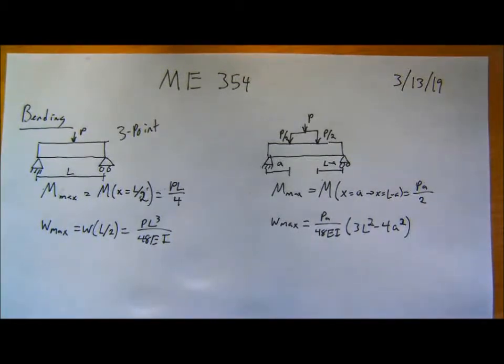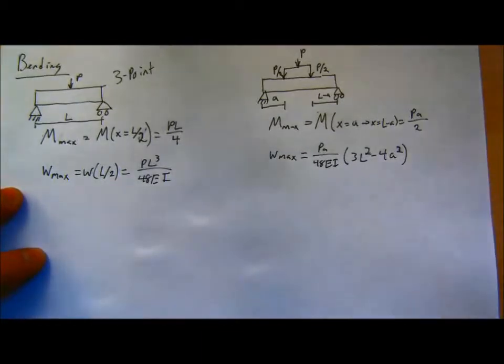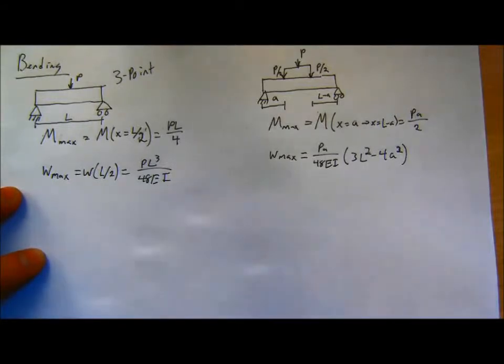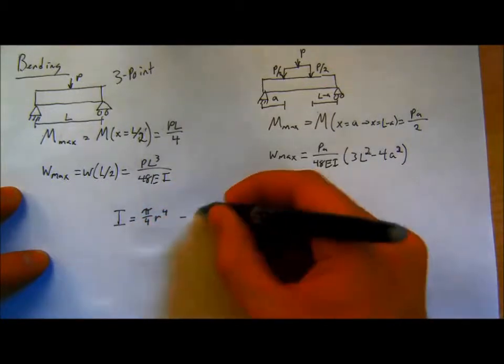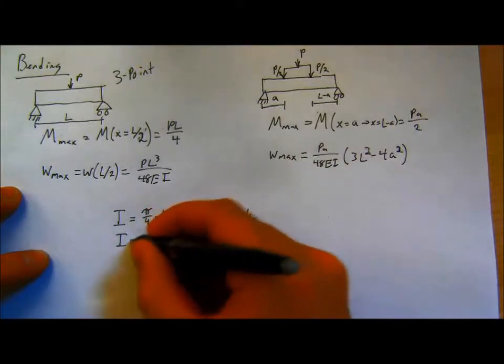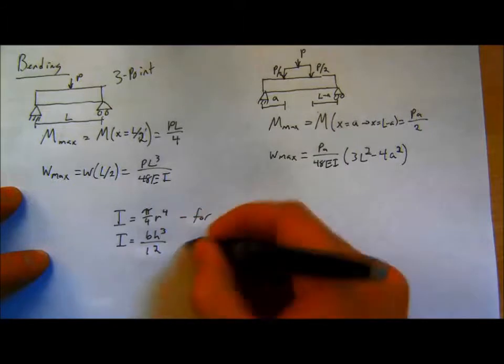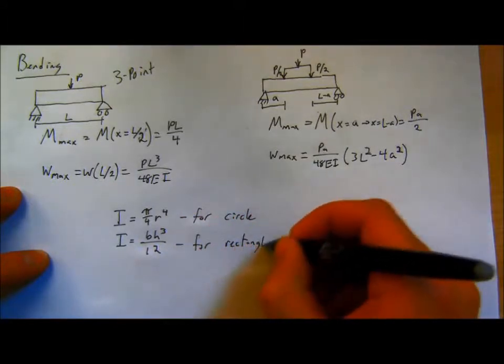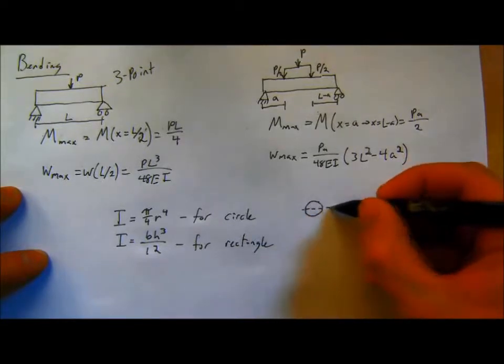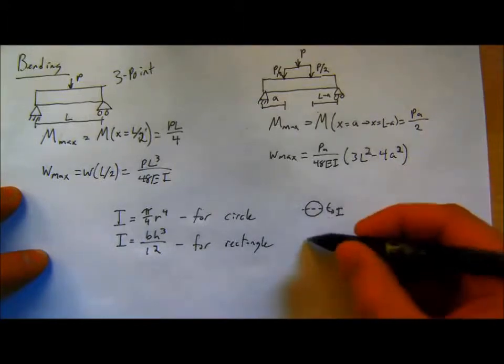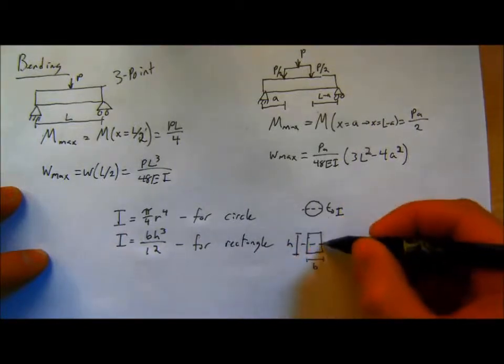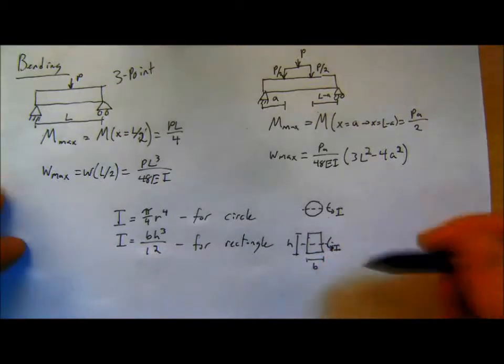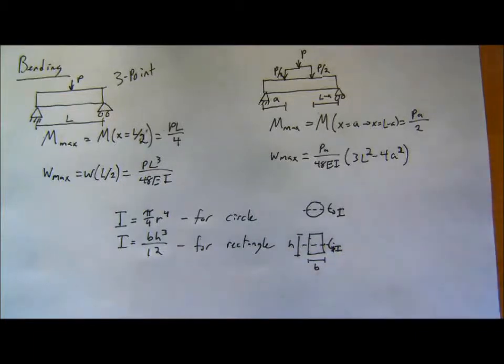So these are the general bending relationships you should remember. You had gone through these in your bending lab, so hopefully they're somewhat familiar. For this I, there's only two I's you should have down. This is the bending area moment of inertia, or second moment of area. I is pi over 4 R to the 4th for a circle, and I is B H cubed over 12 for a rectangle of width B and height H.